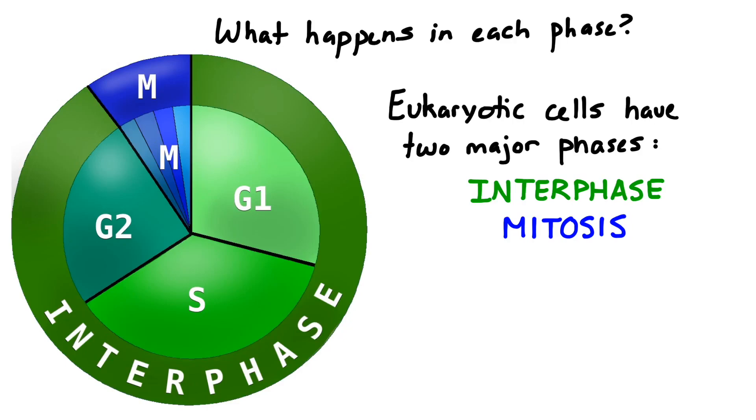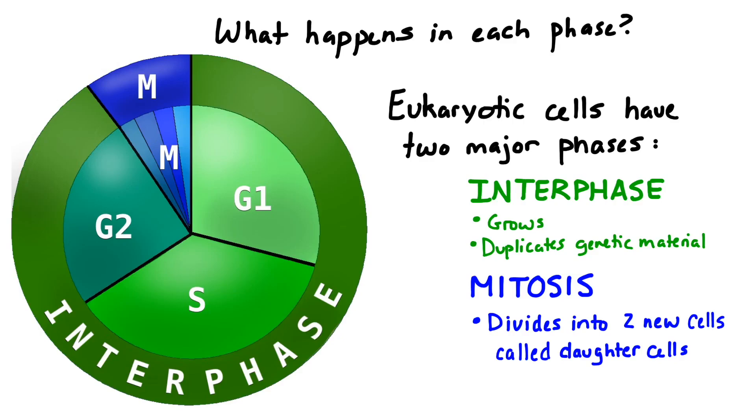Eukaryotic cells have two major phases, interphase and mitosis. In interphase, the cell grows and it also duplicates its genetic material. In mitosis, it divides and forms two new cells called daughter cells.